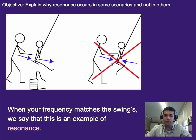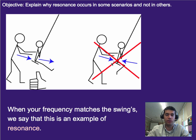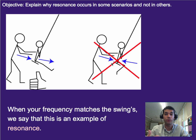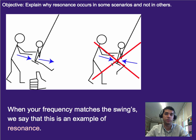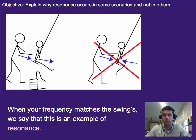So when your frequency matches the swing's, we say this is an example of resonance. Really, any time you have one thing vibrating or causing a vibration and it's matching the natural frequency something else wants to vibrate at — whether they're vibrating already or not — we say this is an example of resonance. What happens is it causes the other thing to vibrate at its natural frequency, and those waves keep adding and adding and adding, so it gets bigger and bigger. There is sometimes some dissipation and stuff like that.